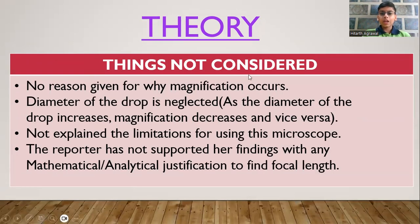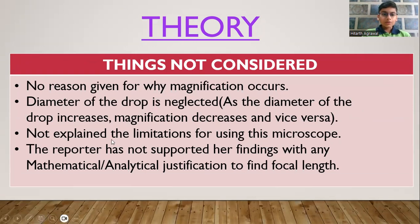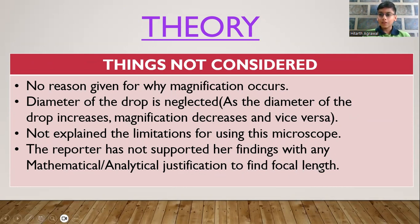In the theory, the things which were not considered were that no reason was given for why magnification occurs — it would be due to refraction. The diameter of the drop was also neglected, as discussed earlier. She has not explained the limitations of using this microscope, such as evaporation. Additionally, the reporter has not supported her findings with any mathematical or analytical justification to find focal length.